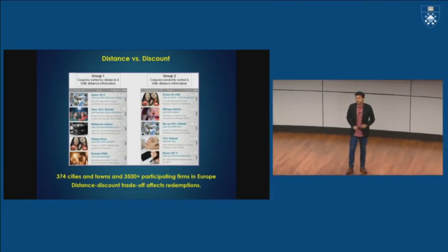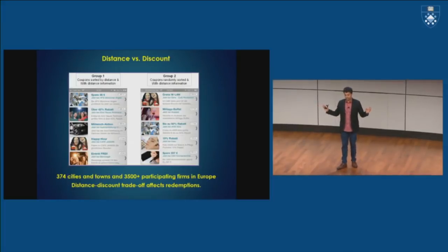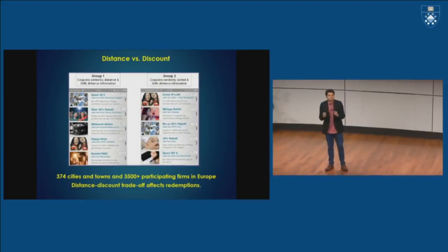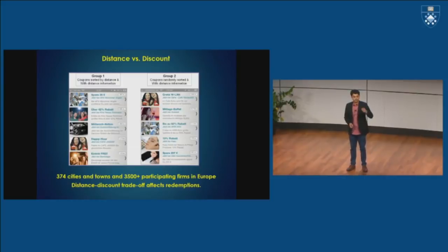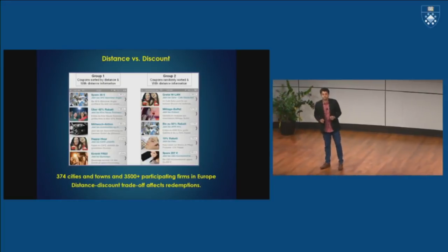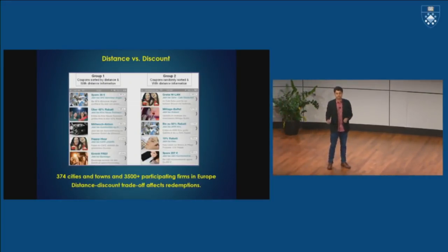Here's another example. This is work in Europe, fairly large project. We had 3,500 different firms, over 374 cities, and what we looked here was a very simple question. So imagine you have an app. When you open the app, you get to see the different offers from different brands, but in this case, the brands also reveal how far they are from you, the distance between the user and the store.